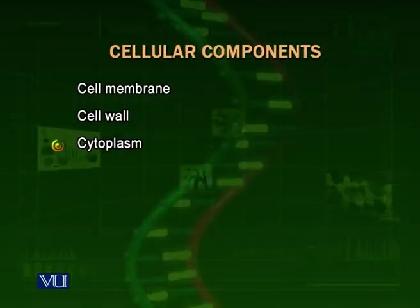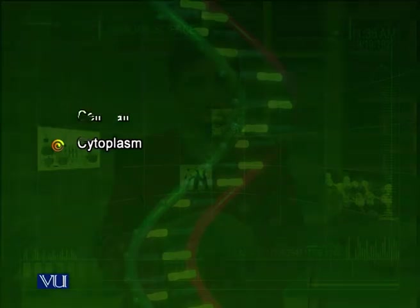The cell wall is an even more protective layer — it is harder in comparison to the cell membrane. Inside the membrane there is a fluid called cytoplasm. Cyto means cell, plasma means fluid. Cytoplasm is the fluid present between the cell membrane and the nucleus. It contains all the organelles and is where functions like metabolism are performed.